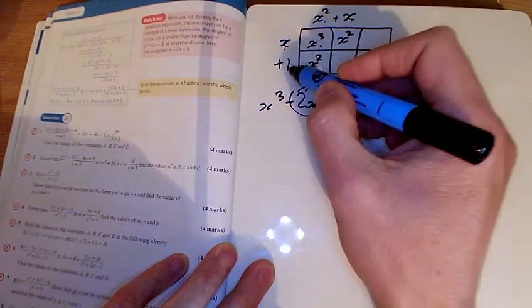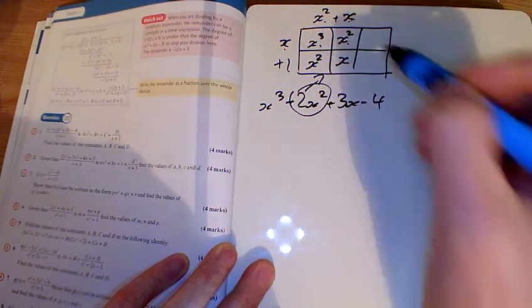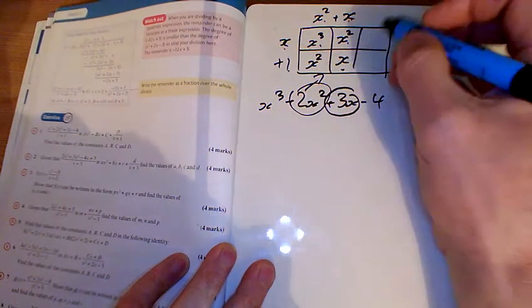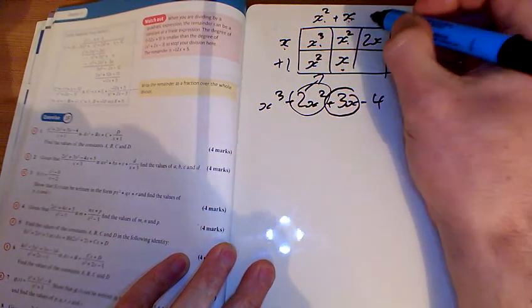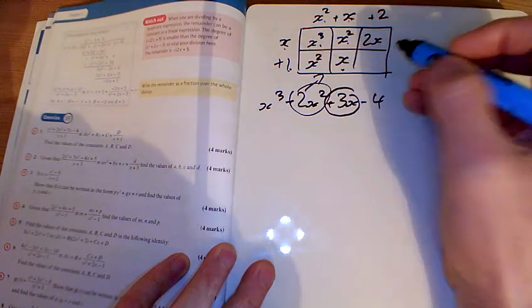x times 1 gives x. That's only 1x, but we want 3x, so we need another 2 here. That must be a +2 there, and 2 times 1 makes 2.